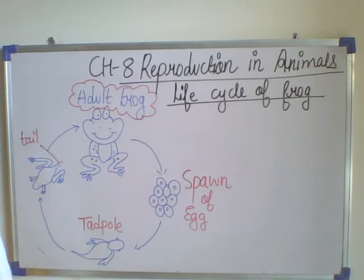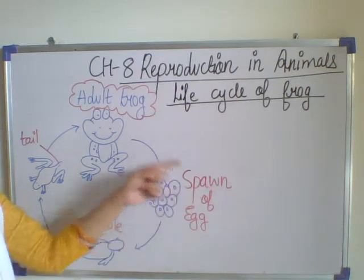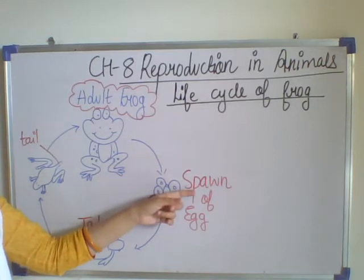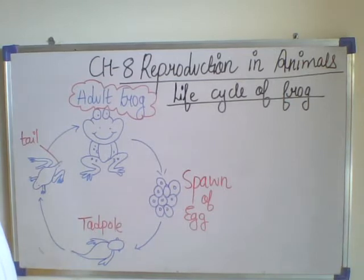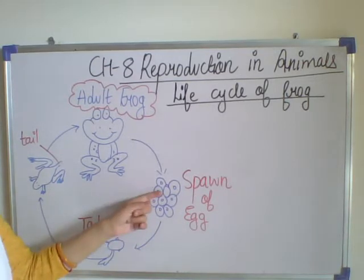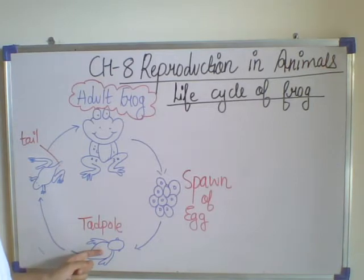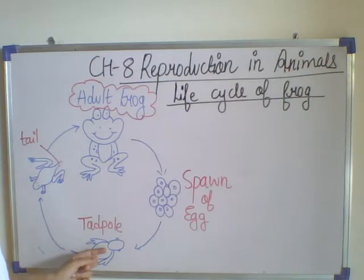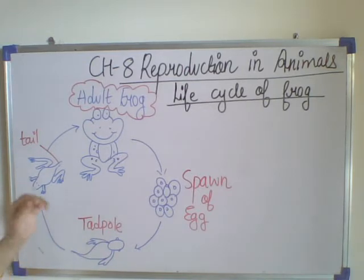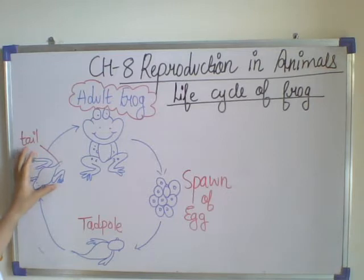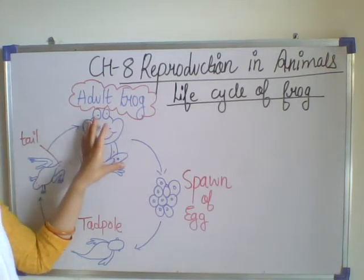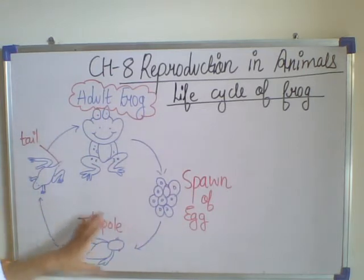A frog lays hundreds of eggs in a lake or pond in a cluster called spawn. Each egg hatches into a tadpole. It lives in water and is similar to a fish — it breathes through gills. The tadpole feeds and grows into a baby frog, and then that baby frog grows into an adult frog. This is the life cycle of the frog.